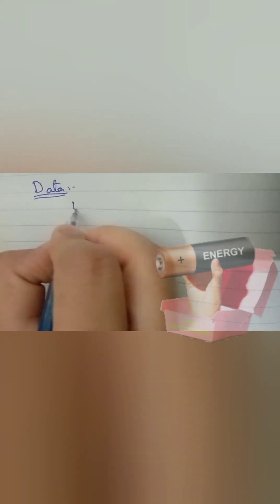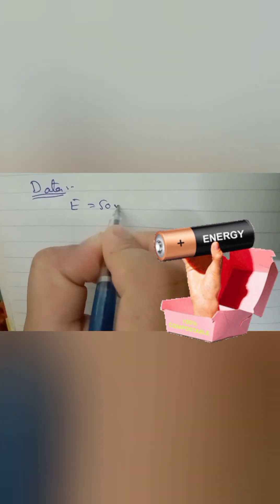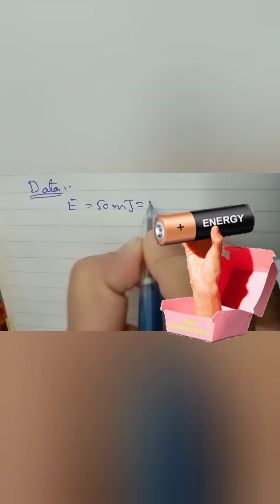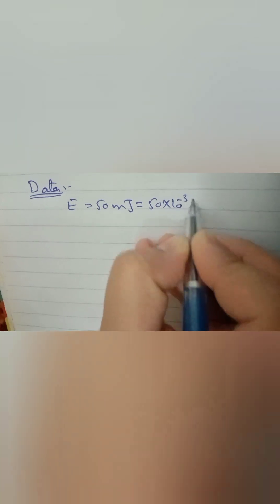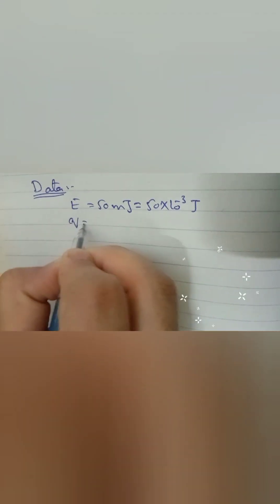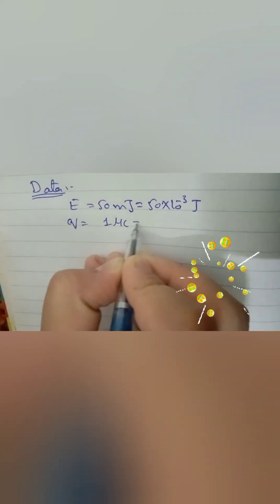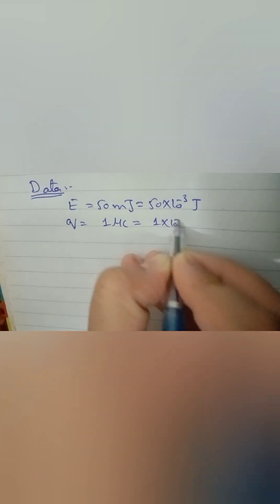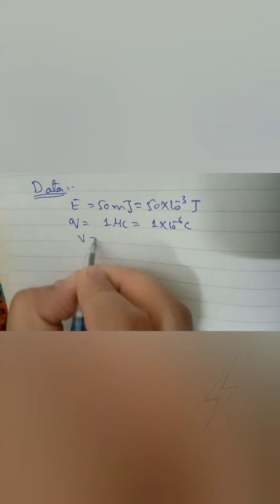This question is very easy to solve. First of all, let us write down the data we have been given. We have been given energy is equal to 50 mJ. mJ is 10 raised to the power minus 3. Charge is given as 1 microcoulomb, and 1 micro is equal to 1 into 10 raised to the power minus 6.